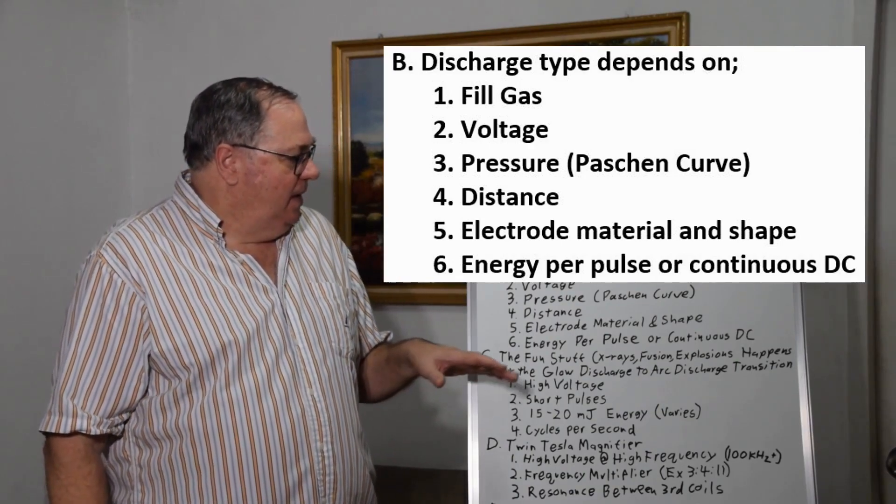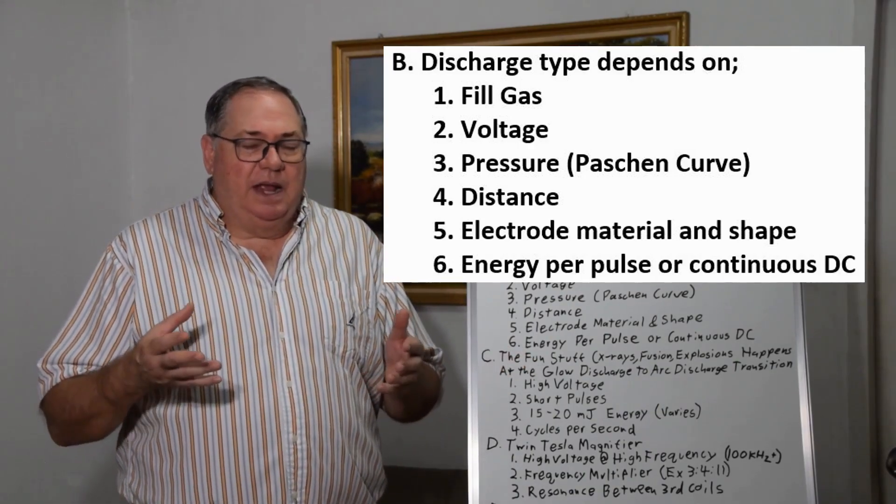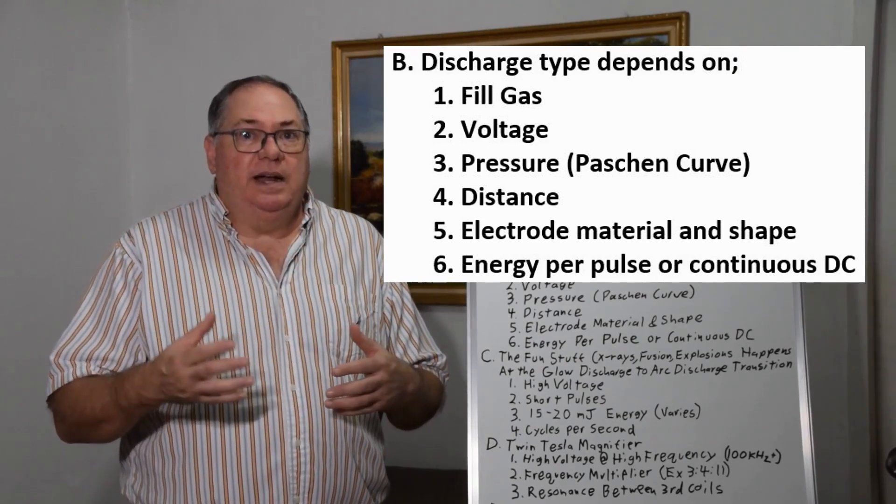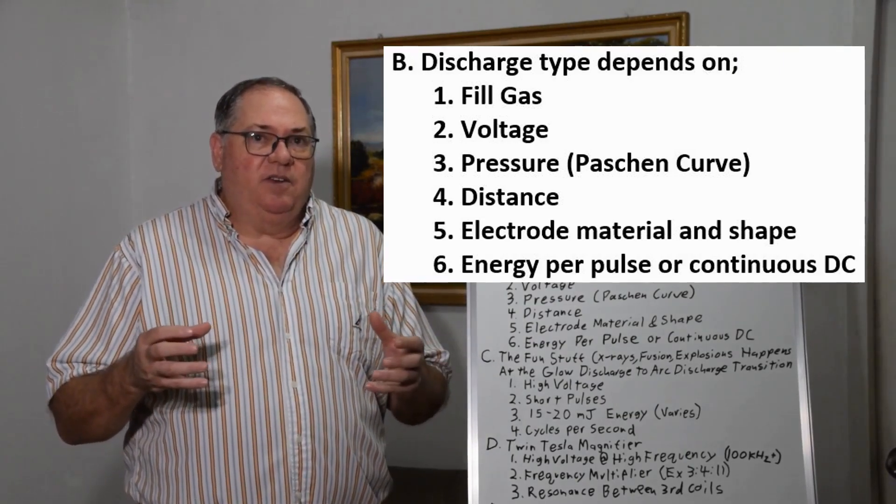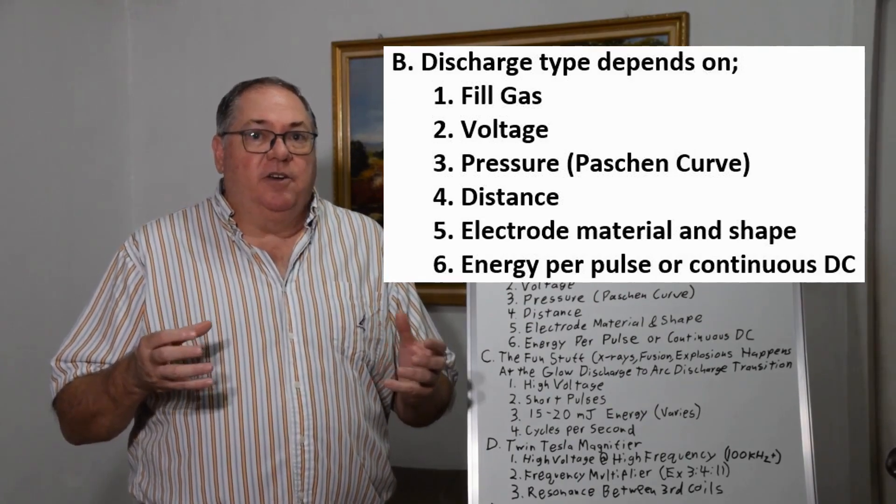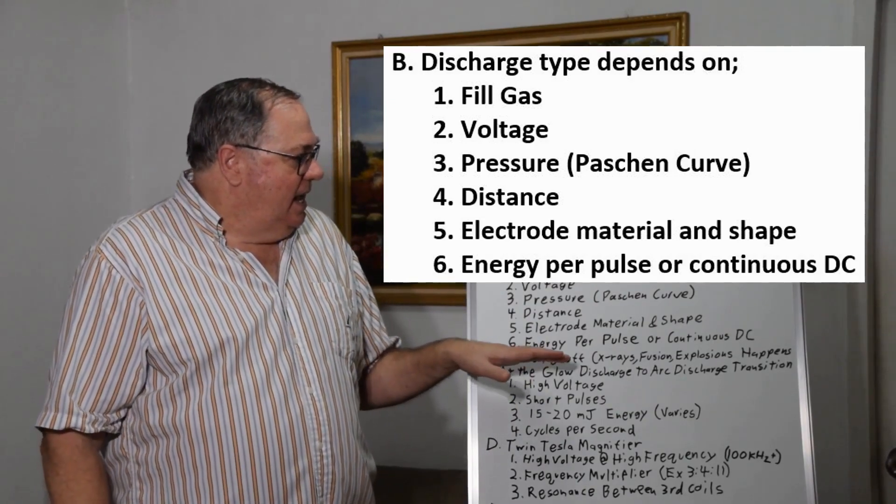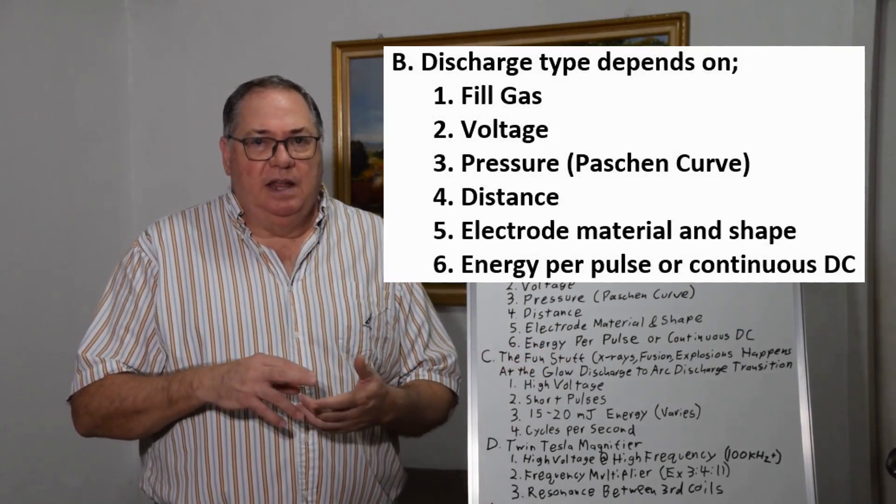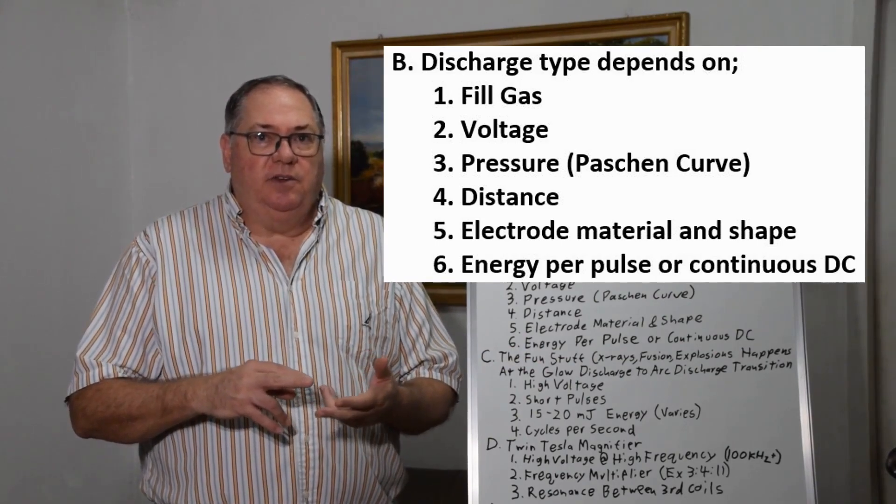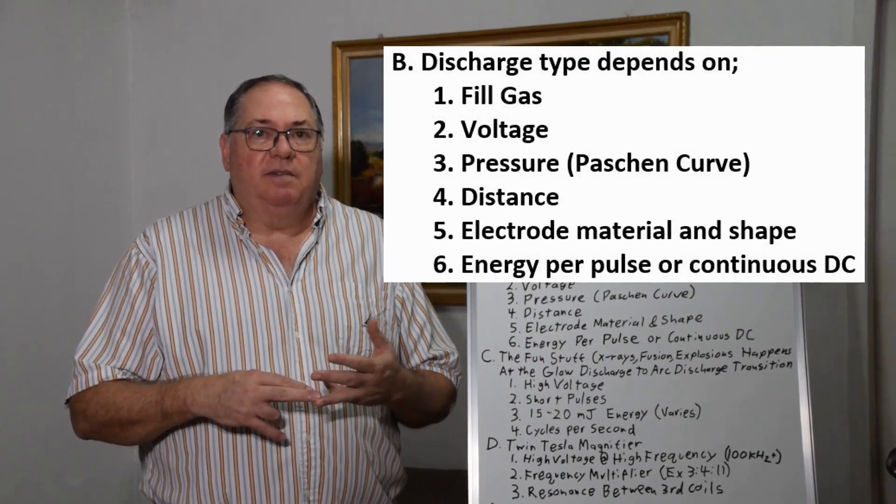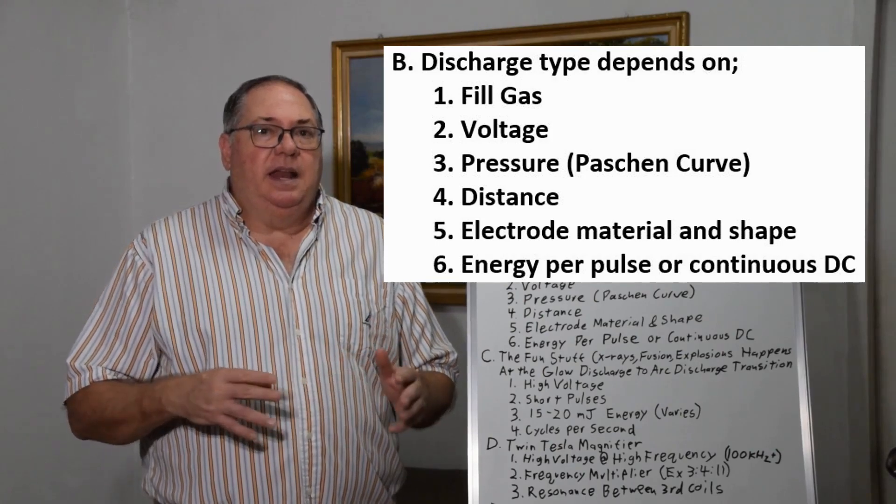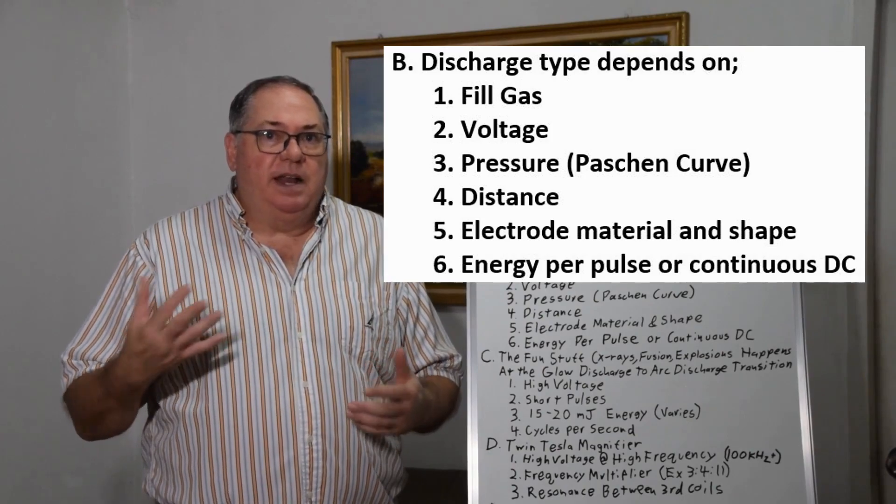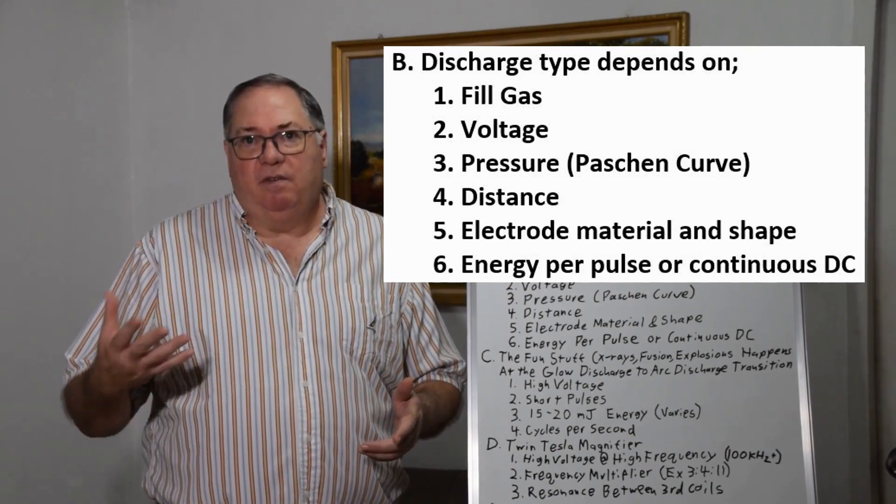The type of metal and shape of the electrode, even things like having thoriated tungsten, can change the energy and voltage at which you get arcs. You can have alternating current, pulse DC, or continuous DC. Each brings different characteristics.